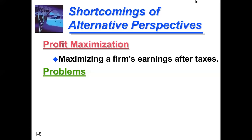Next are shortcomings of alternative perspectives. There are different perspectives with shortcomings. For example, profit maximization — maximizing earnings after tax — is the profit maximization perspective. Profit maximization is different from shareholders' wealth maximization. Profit maximization is a short-term goal, while shareholders' wealth maximization is a long-term goal.